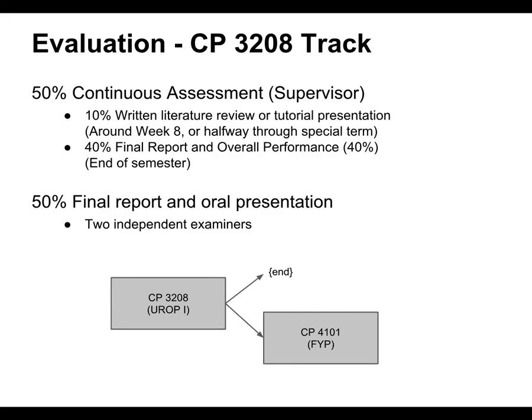For the one-semester version — most of you are doing two semesters — the structure is the same, just compacted into one semester. Again, 50% from your supervisor and 50% from your two evaluators. This also happens when people do a two-semester UROP but struggle after the first semester and want to drop, so they default to the one-semester version. In that case, 40% would be due to your final presentation and overall performance at the end of the semester.